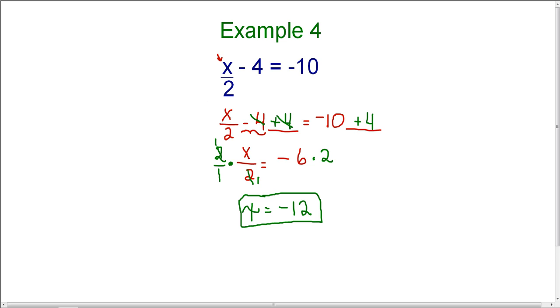Now, we can check this answer as well by substituting negative 12 back into the original problem. The original problem is x divided by 2 minus 4 equals negative 10. So I can substitute negative 12 for x.